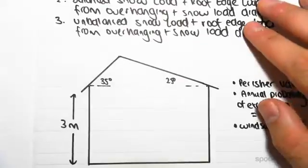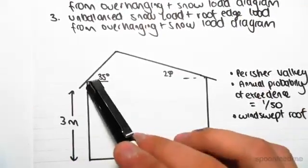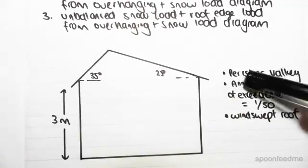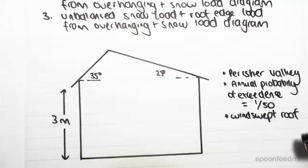So introducing the problem: we have a house like this, three meters high, 35 degrees slope on this roof, 25 degrees slope on that roof. We're told we're in Perisher Valley, the annual probability of exceedance is 1 in 50, and it's a windswept roof.